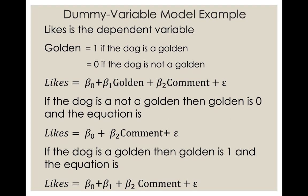Now we're going to add the number of comments as well. The general equation is: likes equals beta naught plus beta one times golden plus beta two times number of comments plus epsilon. If the dog is not a golden, golden gets zero and the equation becomes beta naught plus beta two times comments. If the dog is a golden, golden gets one and we have a new intercept — beta naught plus beta one — with the same slope, beta two times comments.